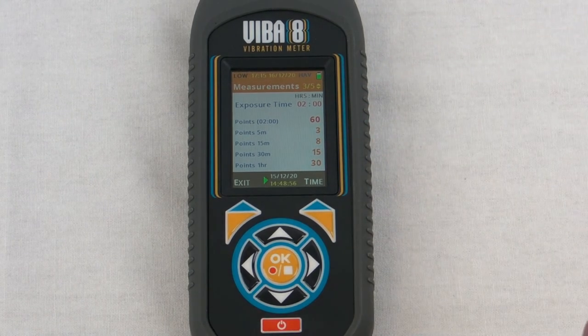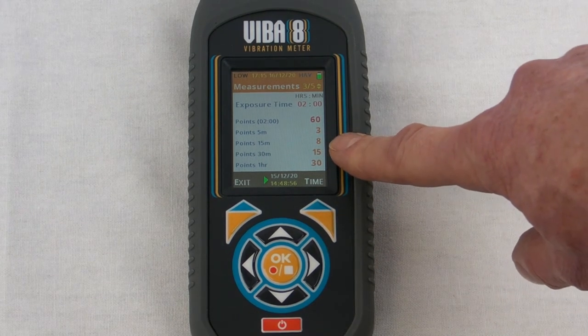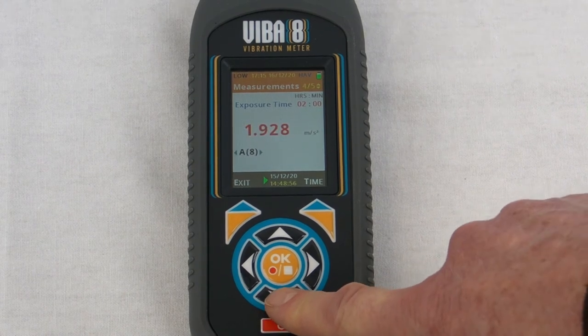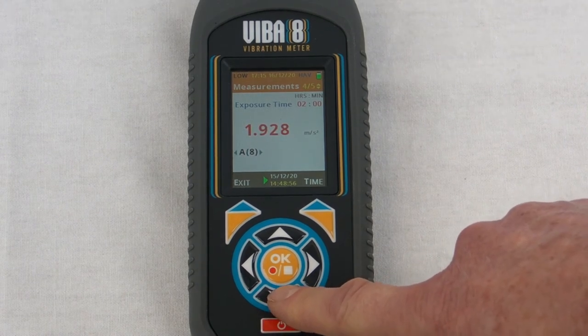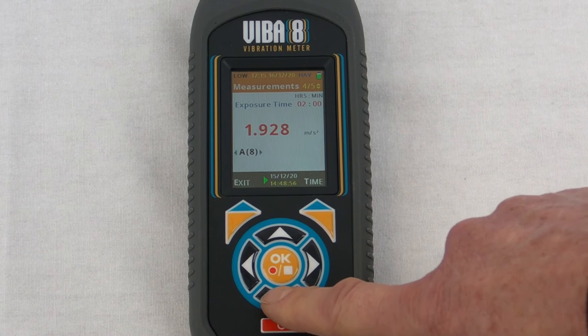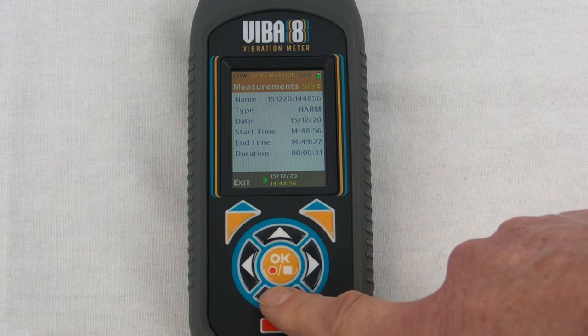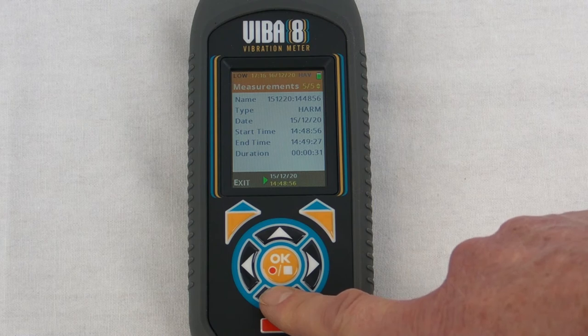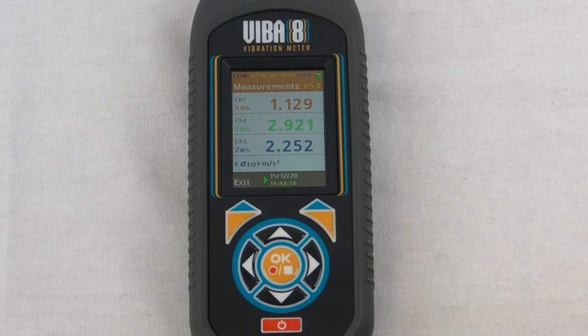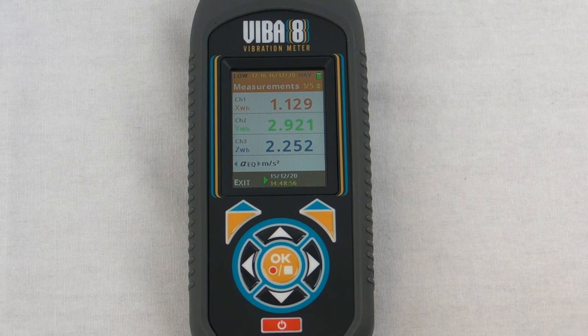The next screen simply has a simple single number display of the a8 value based on the two hour measurements. Following that was just some information about the measurement that was taken, the time and date, what mode it was set in and that kind of information, and then back to the initial screen. So we can see from that measurement we took on the sander sanding that block of wood pointlessly, those are the results that we ended up with.